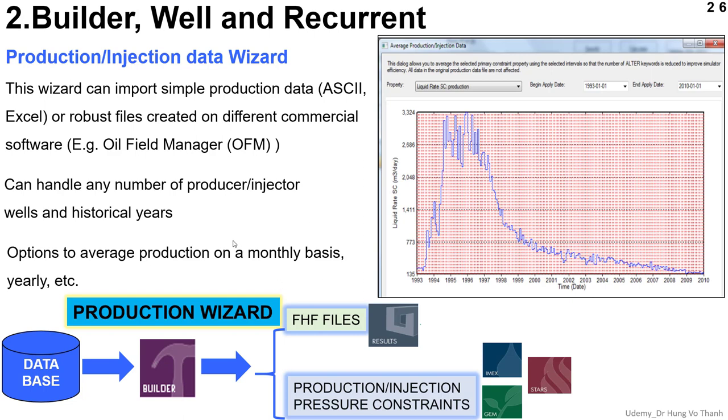Because in CMG, they consider a database for production and injection data. When your data imports to Builder, they will convert to FSF files. It's very convenient after you conduct the simulation using IMEX, CMG, or STARS. They can convert directly the measured data to compare with your simulation result. With this function, you can easily observe whether your simulation already matches or fits with the measured data or not. So it's very useful for history matching results. This kind of information we will consider in this tutorial as well.